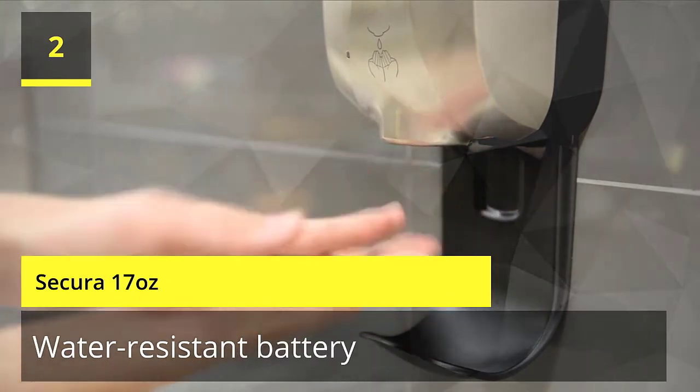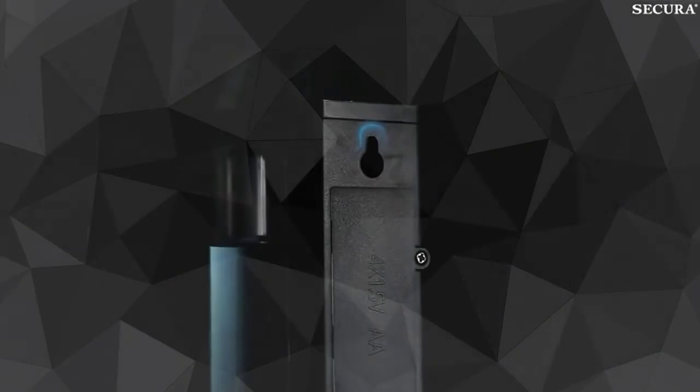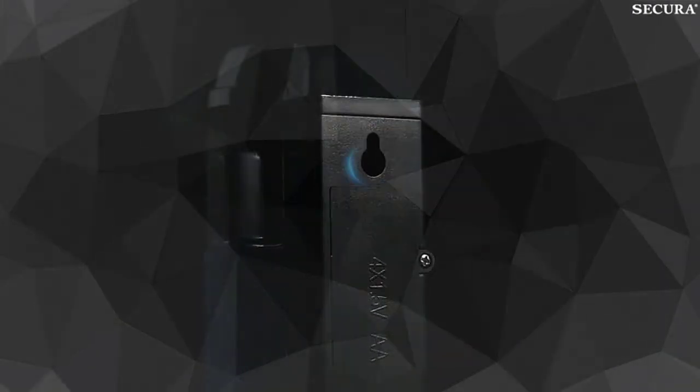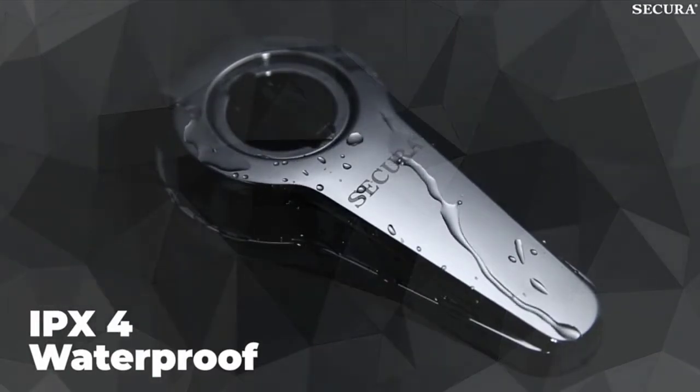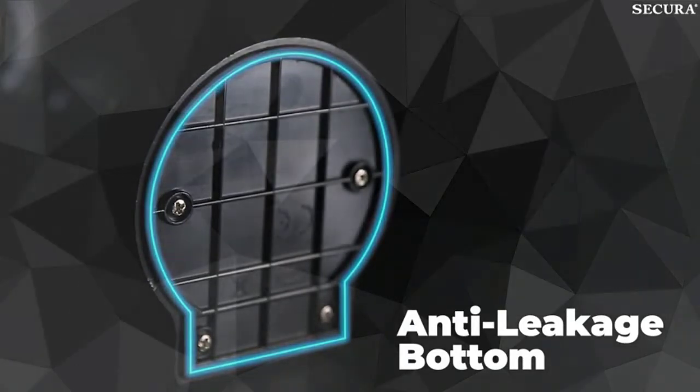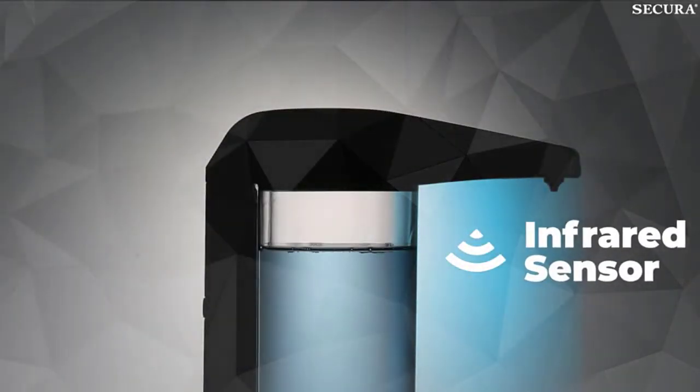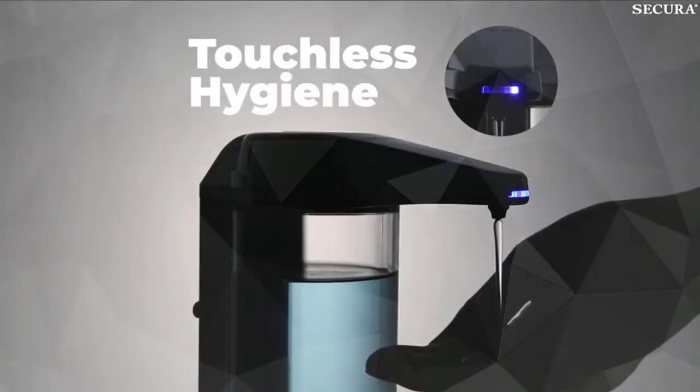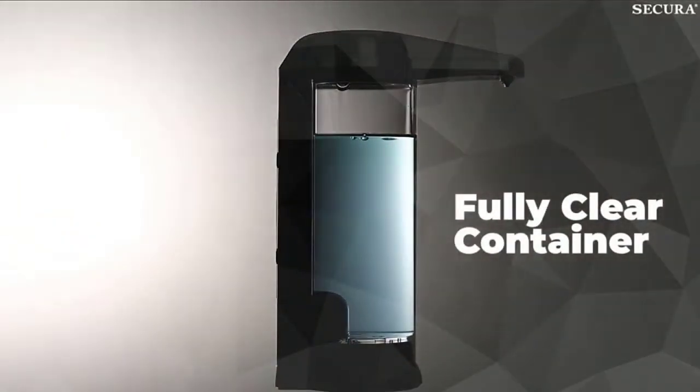Number 2. Secura 17 ounce water-resistant battery-operated automatic soap dispenser with 17 ounce capacity container. Four AA alkaline batteries are not included. Attractive and stylish high-quality chrome and black finish with clear soap container can be wall-mounted or placed on a countertop. Infrared sensor detects your hand from as far away as 75 inches. Touchless operation provides easy, hygienic soap dispensing. Includes a 2-year manufacturer's warranty.